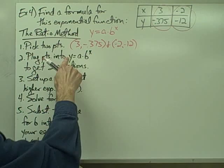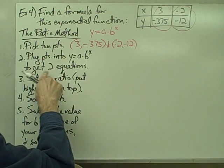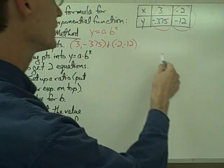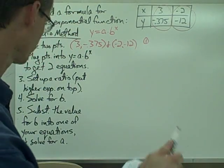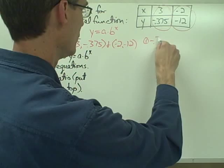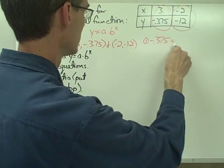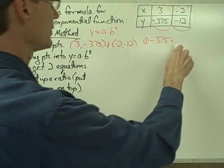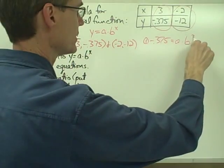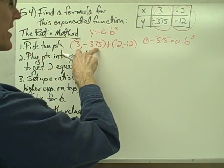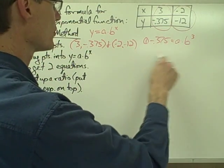Plug the points into y equals a times b to the x to get two equations. Let's see, put equation number one right here. y, negative 0.375, equals a times b to the power of x. x is 3 for this set of coordinates. So there's my first equation.